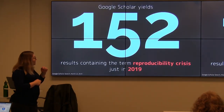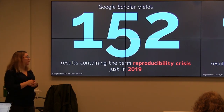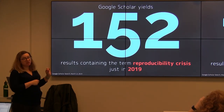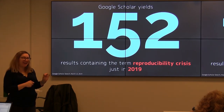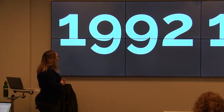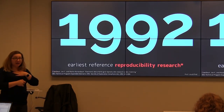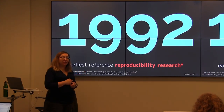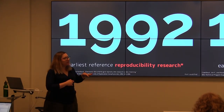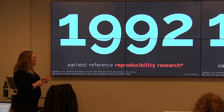152 is the number of results Google Scholar yields containing the term 'reproducibility crisis' just in 2019. So is the crisis there? Yes, and people are talking about it and writing about it. And 1992 was the earliest reference I could find to the term reproducibility in research. So we're going to take a historical view initially and then come to today and see how we can achieve reproducibility.